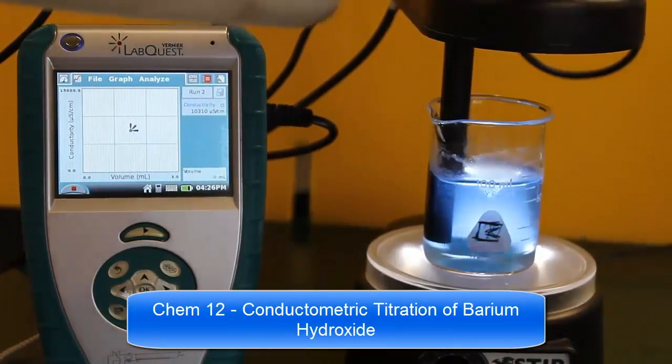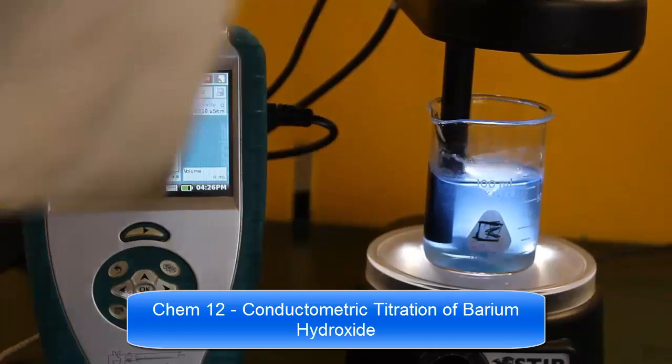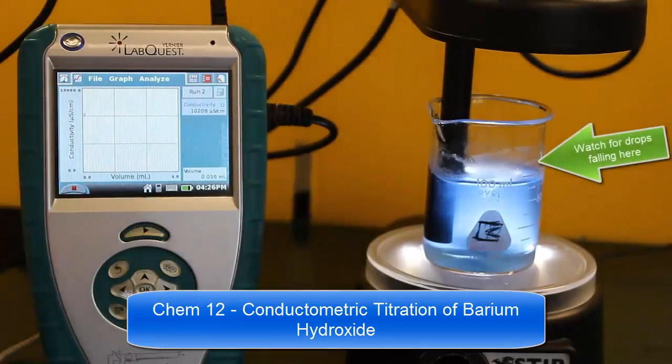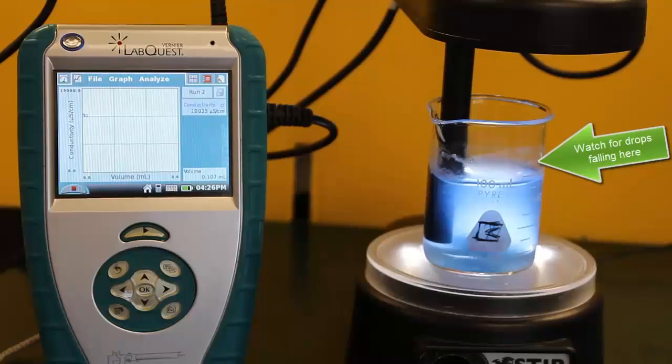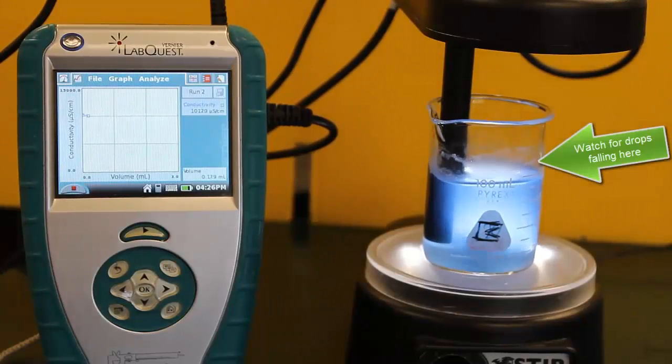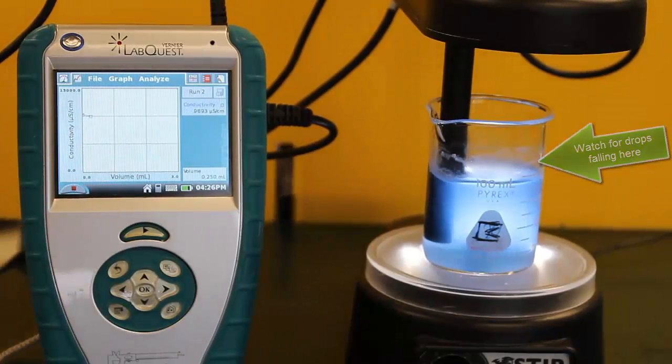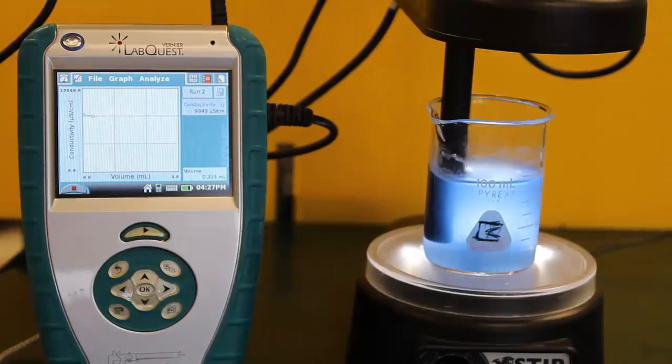Welcome everyone, here we have the conductometric titration of barium hydroxide. Watch for the falling drops of sulfuric acid on the right-hand side as they drop into the blue solution of barium hydroxide.